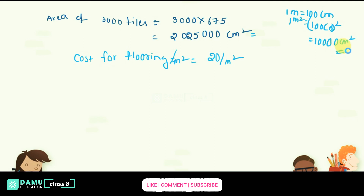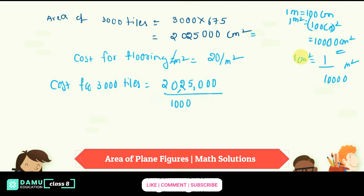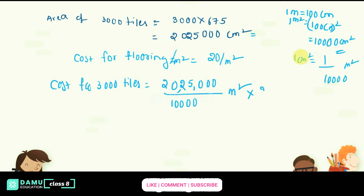So 1 centimeter square is equal to 1 by 10,000 meter square. Substituting, the total area becomes 20,25,000 divided by 10,000 meter square, which equals 202.5 meter square. The cost is area into rate, so 202.5 into 20 rupees. Cancelling the zeros, we compute 2025 into 2, which gives 4050 rupees.